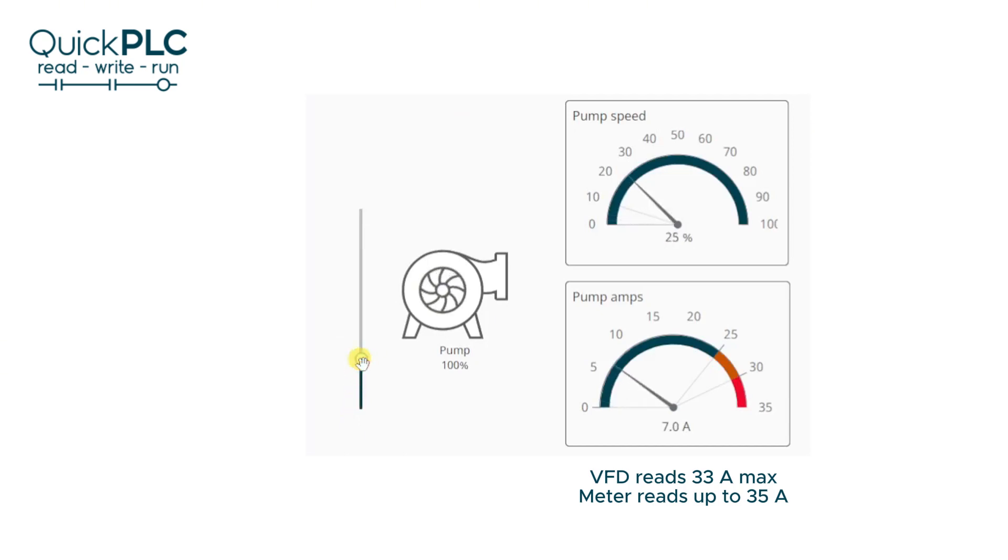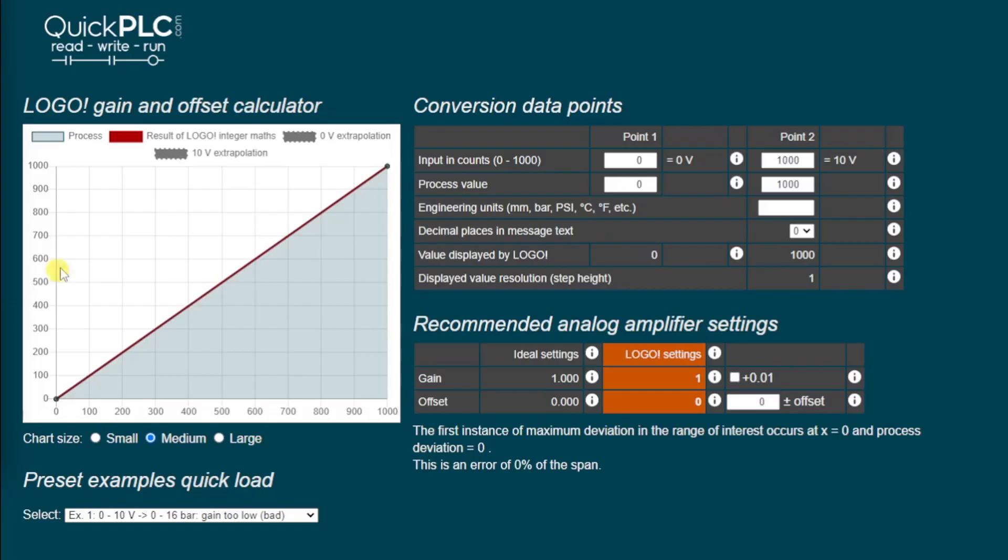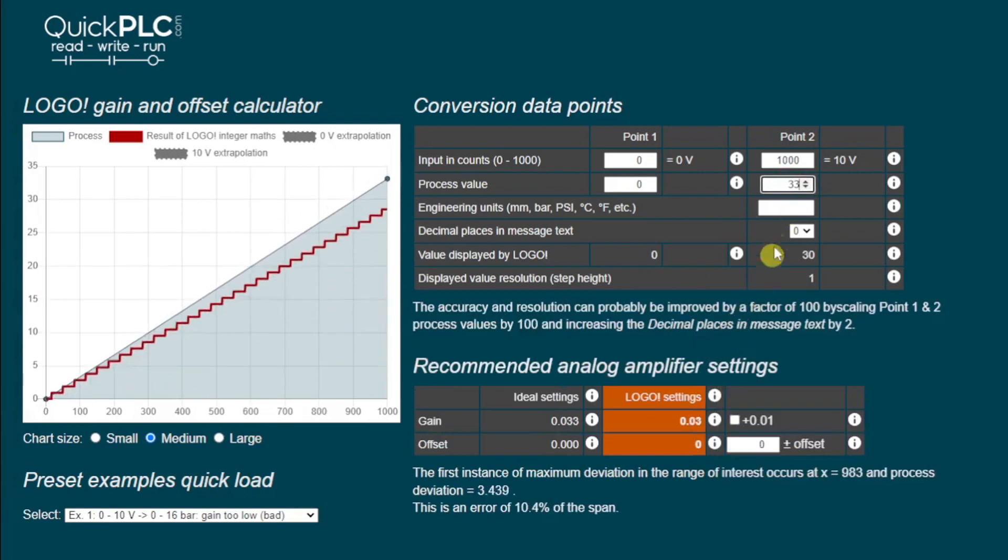In this example, we've got a signal coming back from a variable frequency drive and the 0 to 10 volt range indicates a current of 0 to 33 amps. So again, we'll just start off with a 33 here. We'll put in amps just as a reminder. And we can see that we have a problem on the chart. We can see a large step size. The displayed resolution is only steps of one amps. And the maximum error reported down here is 10.4% of the span.